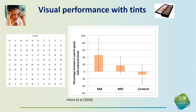Does it make a difference? Yes — we provided a tint for participants to use while they performed a visual search task where they had to find the word 'new' in an array of letters and touch the screen. People who had migraine with aura performed about 40% more quickly with their tint than without it, whereas there was no difference for migraine without aura and no difference for controls.